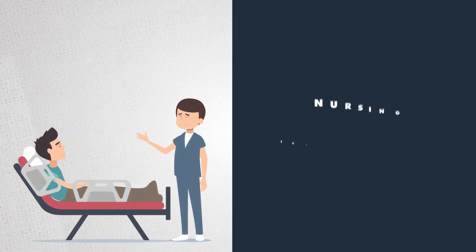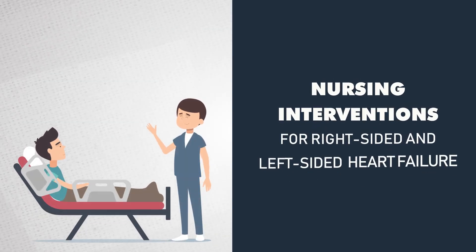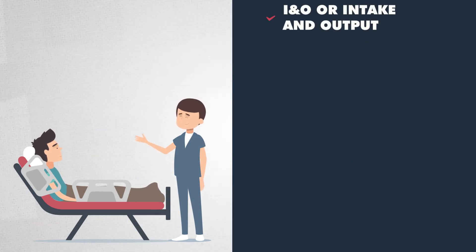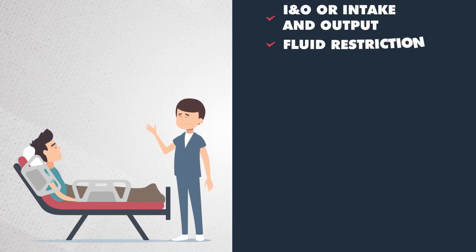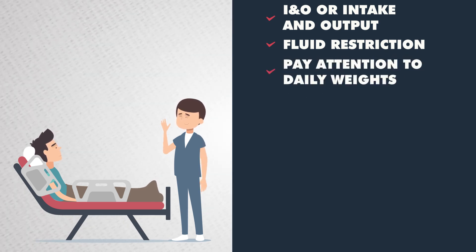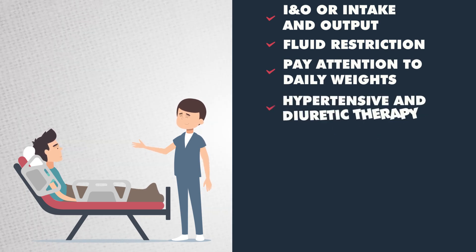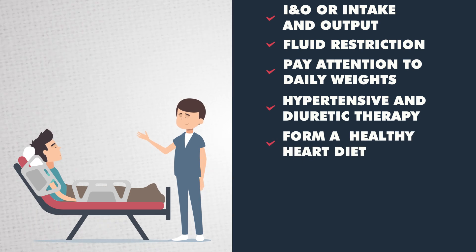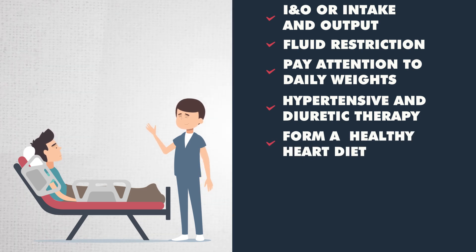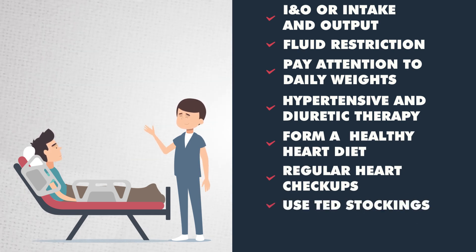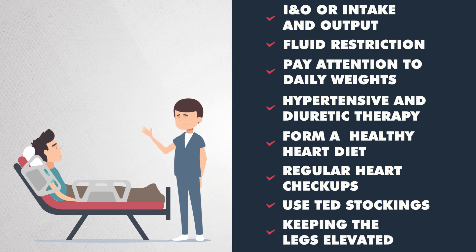As for nursing interventions for CHF — whether right-sided or left-sided heart failure — we monitor intake and output (I&Os), place patients on fluid restrictions to avoid fluid overload, and pay attention to daily weights. We continue antihypertensive and diuretic therapy, promote a heart-healthy diet such as lowering sodium intake, and arrange regular heart checkups or a possible referral to cardiology. We may also use TED stockings for venous return or keep the legs elevated.